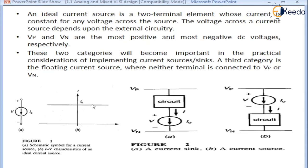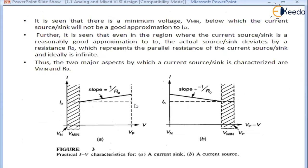It is seen that there is a minimum voltage Vmin below which the current source or sink is not a good approximation to I0. In the region where it is not a good approximation, the actual source and sink deviate.